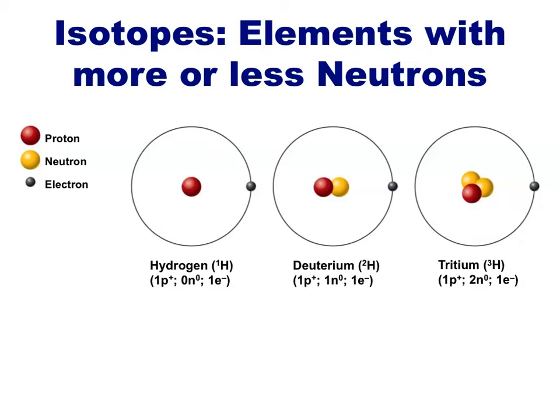Note that these isotopes will not differ in their charge, only in their mass, because they have different numbers of neutrons.